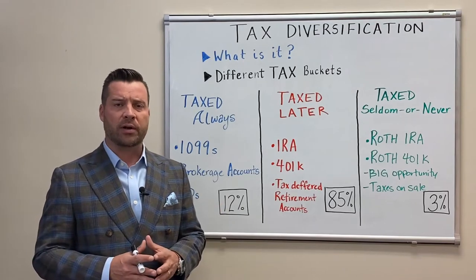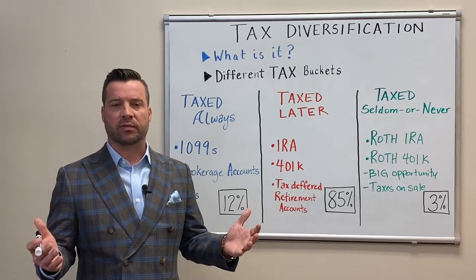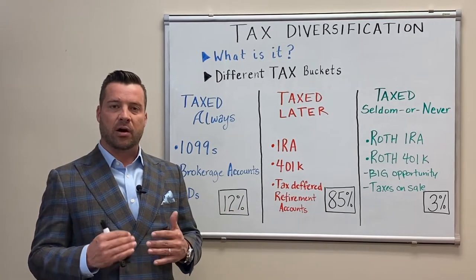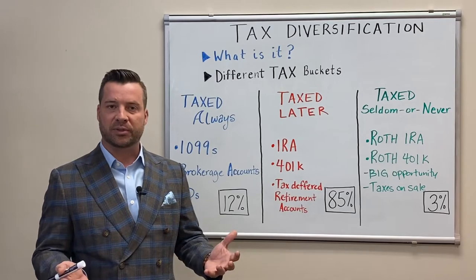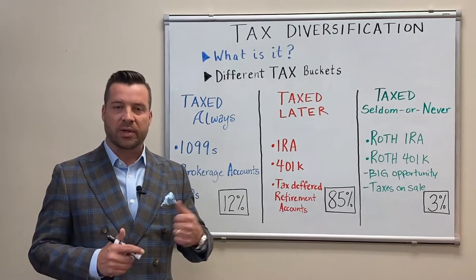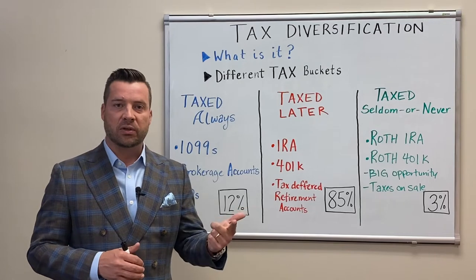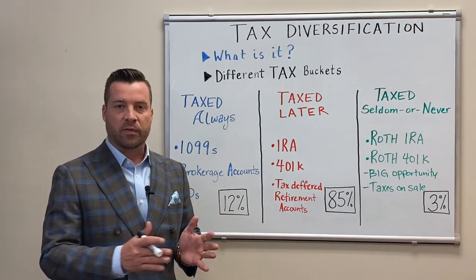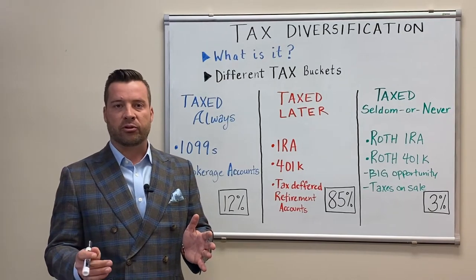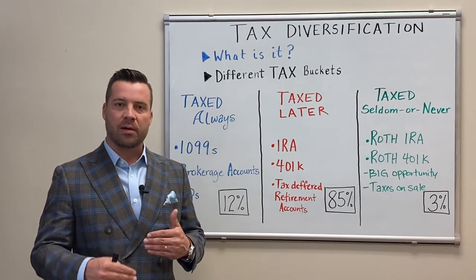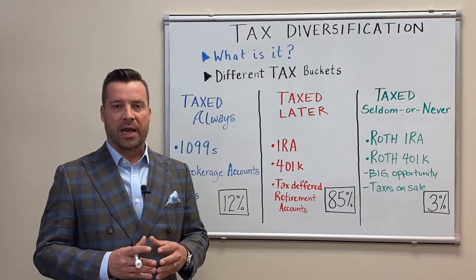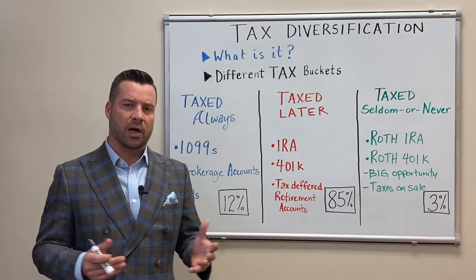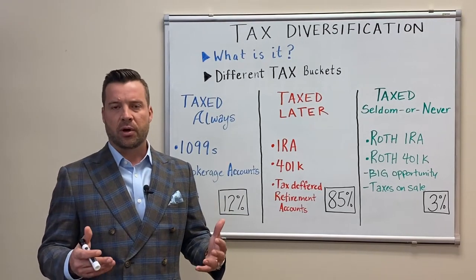We've heard and understand how and what it means to be diversified within our investments. Then we also talk about being diversified in our income — income streams in retirement: Social Security, potentially a pension, rental income, dividends, interest, annuities — all these different ways that we can diversify our income. But the overlooked one is tax diversification.